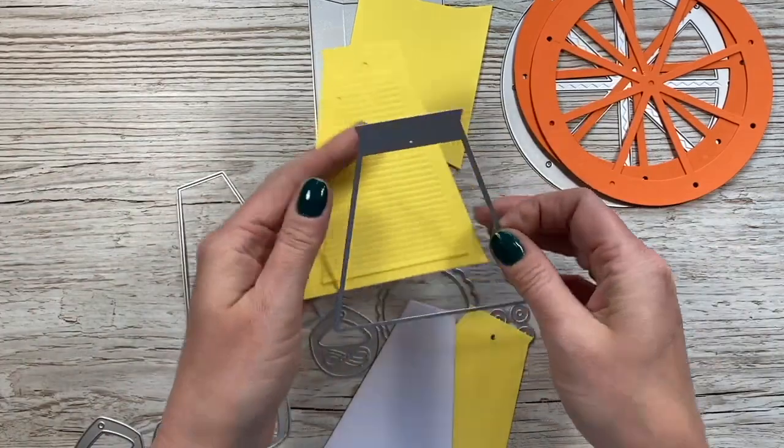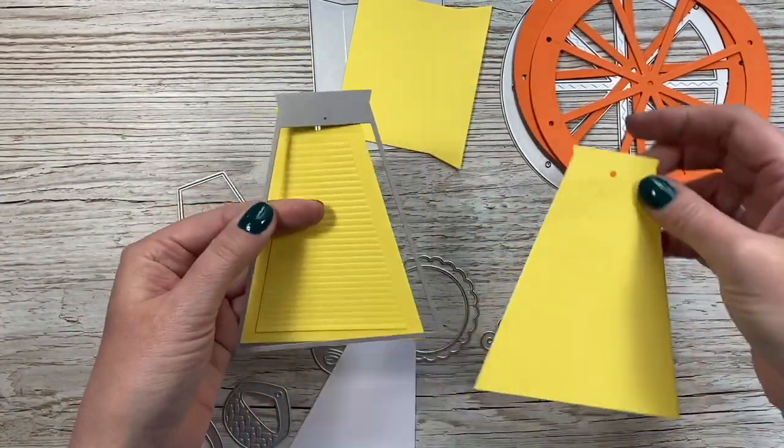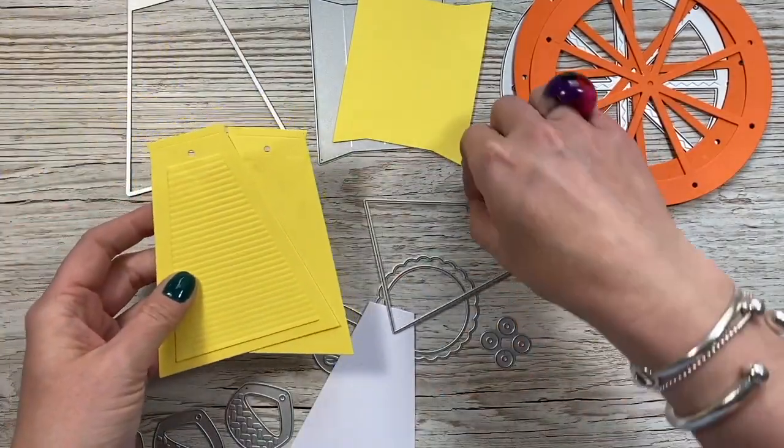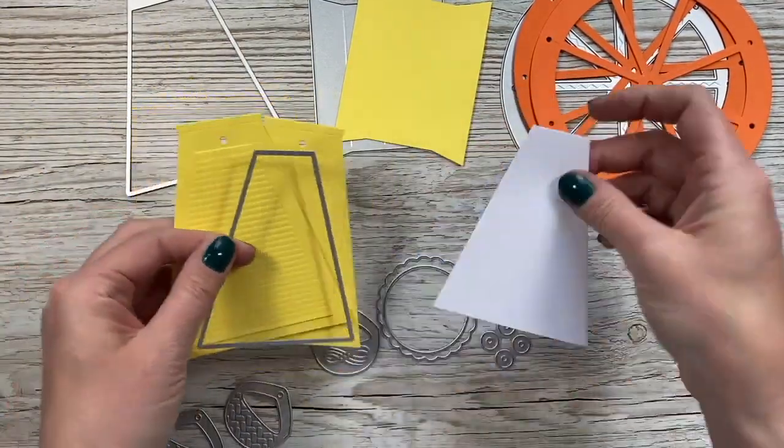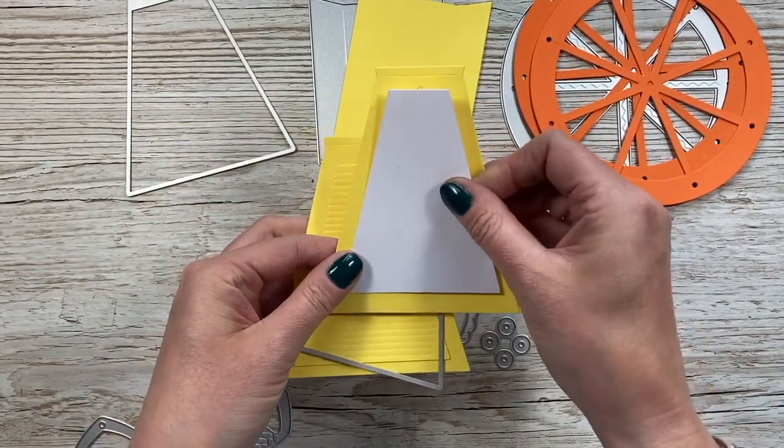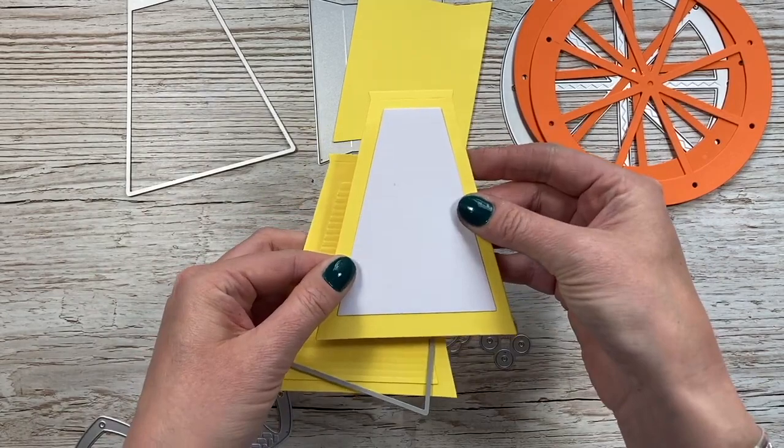Then you get the smaller one which is to die cut the decoration. You can use it with pattern paper. You want to die cut one of them in white because one will go on the back, which is your space to write your message. You'll see it fits nicely there and it will cover that little hole.